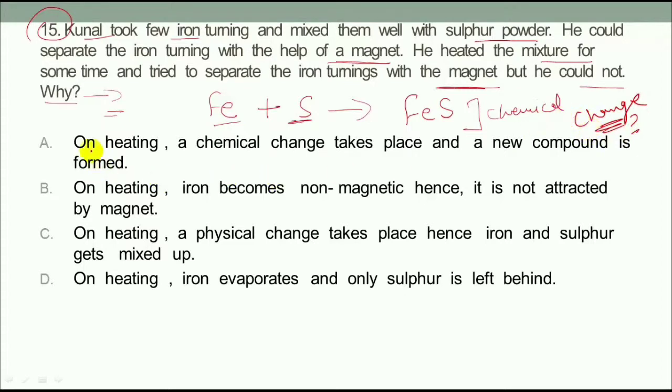On heating, a chemical change takes place and a new compound is formed. Correct? Option B: on heating, iron becomes non-magnetic. It is not attracted by a magnet.